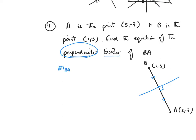The gradient of BA is y2 minus y1 over x2 minus x1. So that's minus 7 minus 3 over 5 minus 1. Minus 7 minus 3 is minus 10; 5 minus 1 is 4. I can simplify that — divide top and bottom by 2 — and that brings me down to minus 5 over 2. So the gradient of line BA is minus 5 over 2.